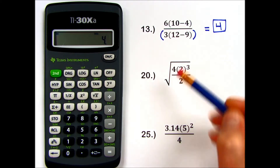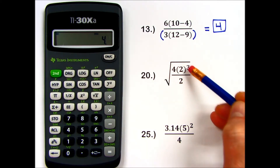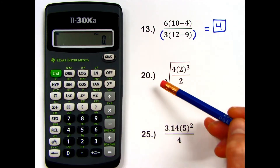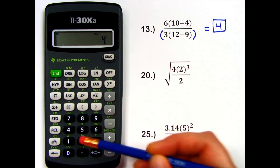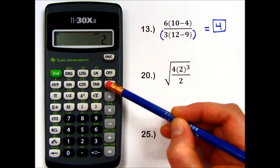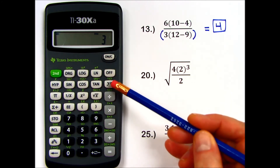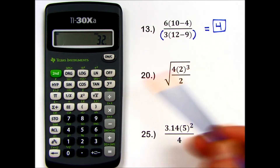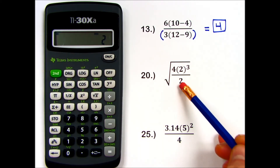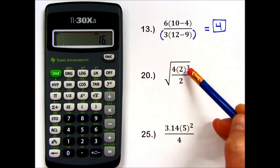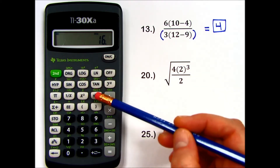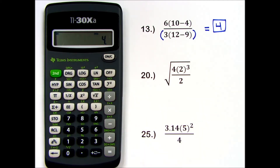In problem number 20, I have a square root of multiple operations on the inside. We're going to perform these first and take the square root at the end on this calculator. So I have 4 times 2. I need to cube my 2 and I don't have a cube button, so I will say to the power of 3 with my exponent button, press equals — and this is my numerator — divided by my denominator of 2. 2 does not need any extra parentheses because it's so simple. So this group inside the root sign is 16, and then I take a square root. On this calculator there's a square root key right there, and my answer is 4.